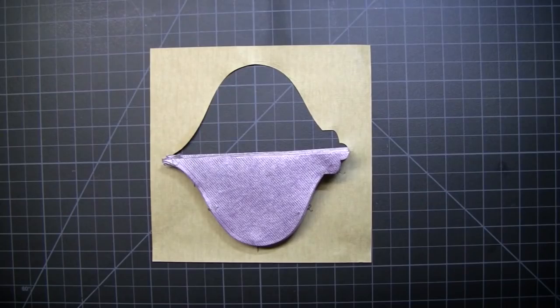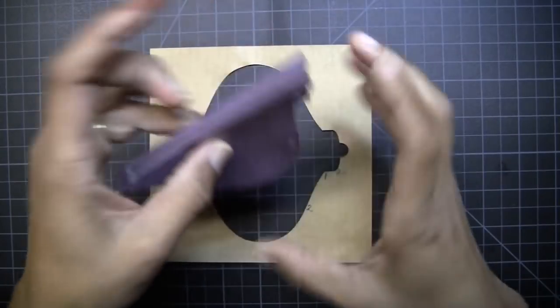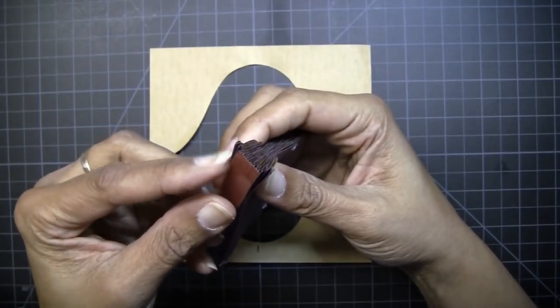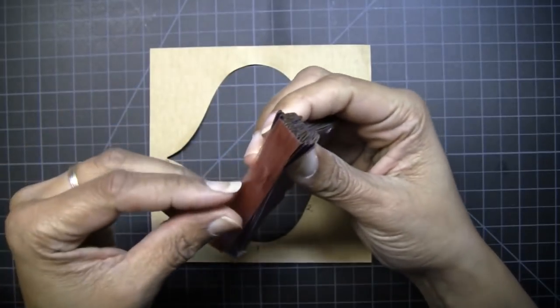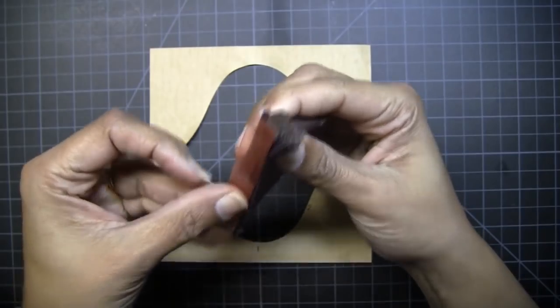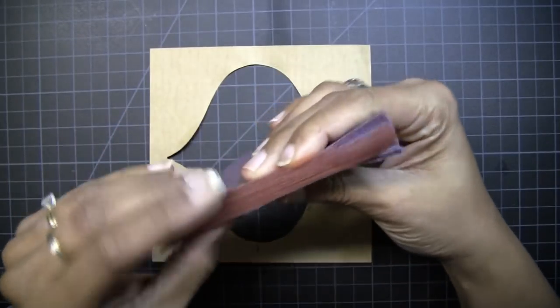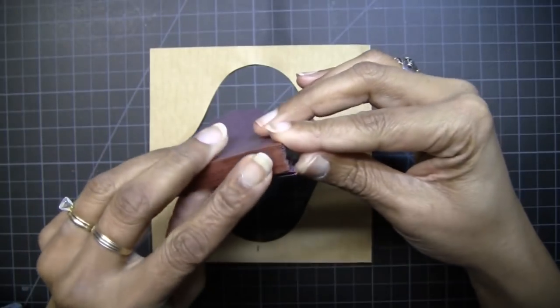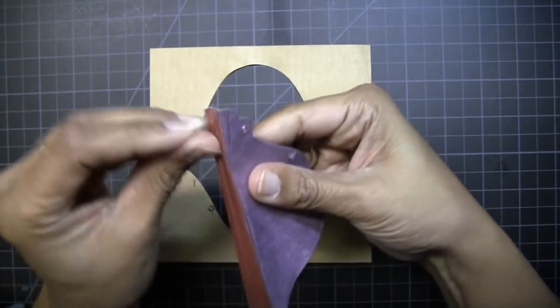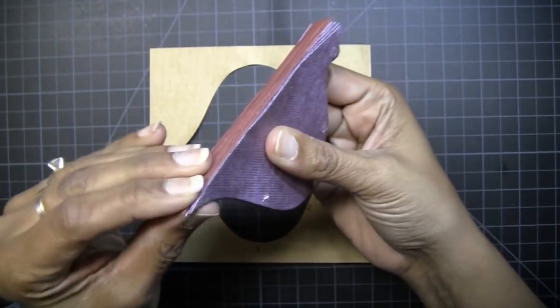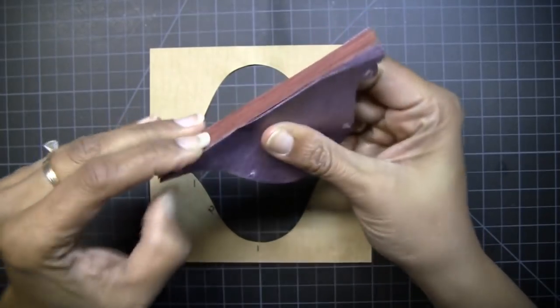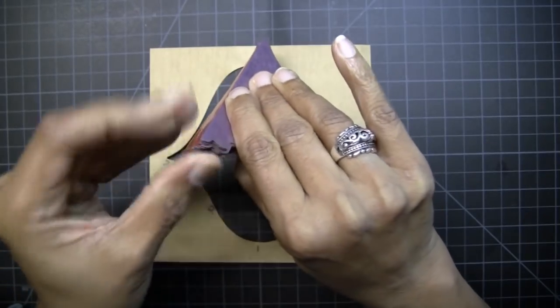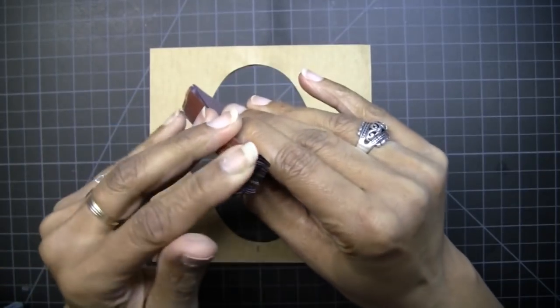So now I'm ready to take my red tacky tape and apply it along this spine, like so. Once you get it in place you want to take and you want to burnish it down so that the adhesive on the tacky tape will stick to the spine.